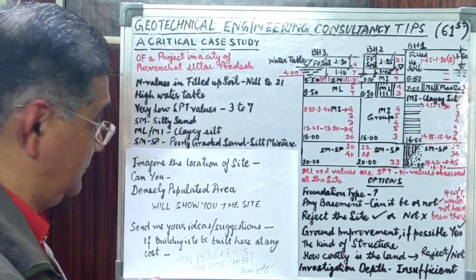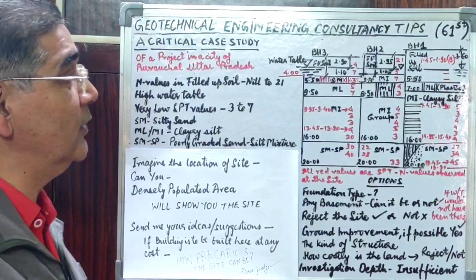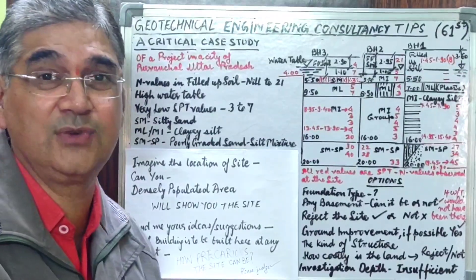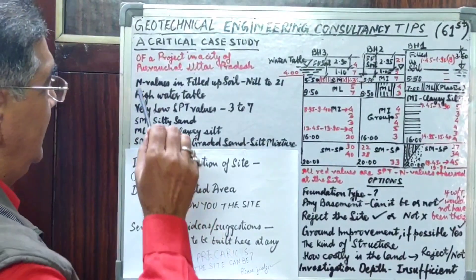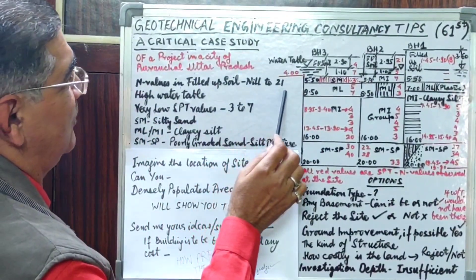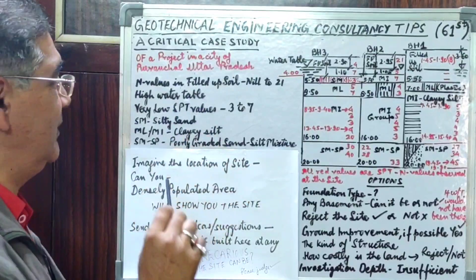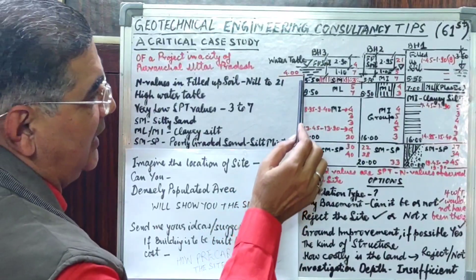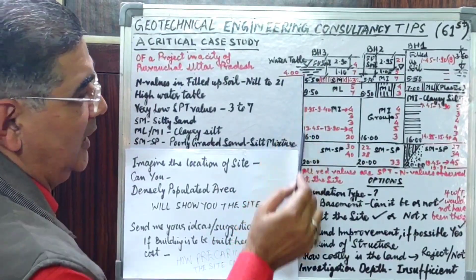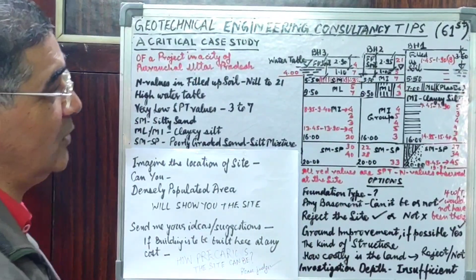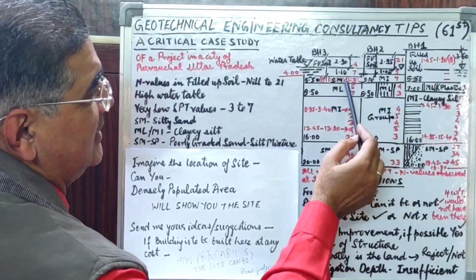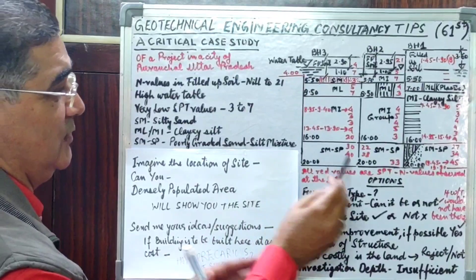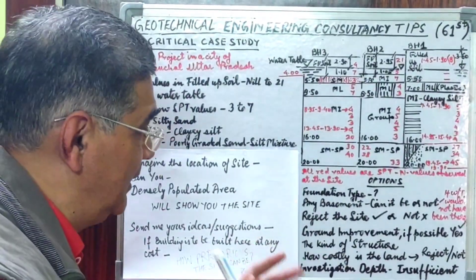From this investigation it's very difficult to come to a real-time conclusion for this project site. N-values in filled-up soil ranged from 0 to 21. There was a high water table. Very low SPT values ranging from 3 to 7 were encountered right from below the filled-up soil depth up to the 16-meter level, comprising ML, MI group soil, SM-type soil, and after that SM-SP poorly graded sand mixture with high N-values.